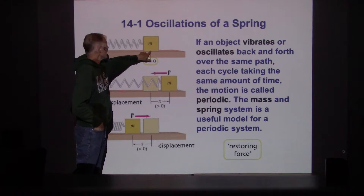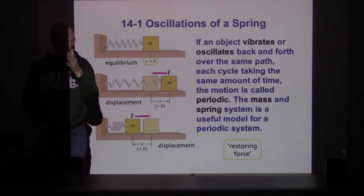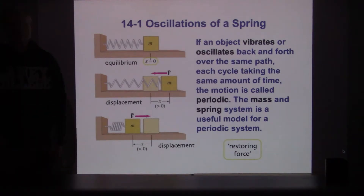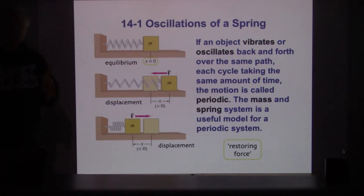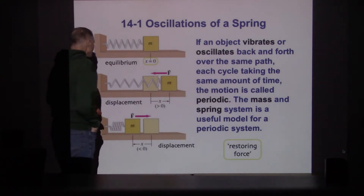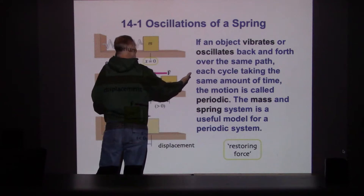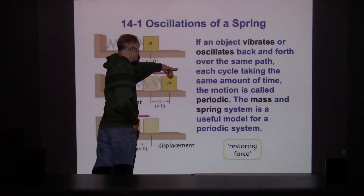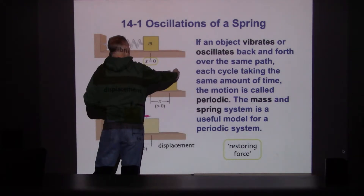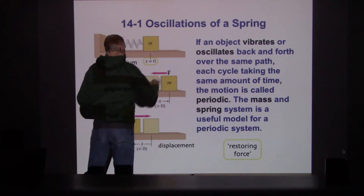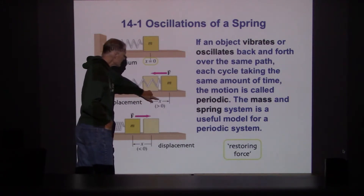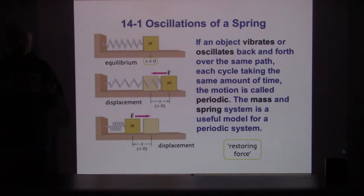We attach the spring and pick a point - call that the center of the object - and call the equilibrium location x equals zero. That's a useful way to set up our coordinate system: have the very center point be x equals zero. If we pull the object back in this direction and let go, there's going to be a force back towards the equilibrium location. So x is measured as displacement from equilibrium at x equals zero.